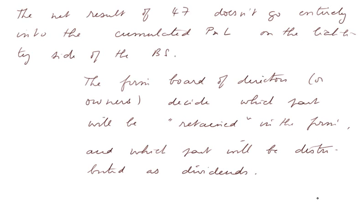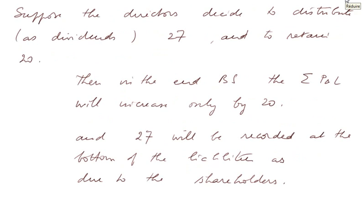The net result of 47 doesn't go entirely into the accumulated P&L on the liability side of the balance sheet, as we saw before. The firm's board of directors or owners decide which part will be retained in the firm and which part will be distributed as dividends. Suppose the directors decide to distribute 27 as dividends and to retain 20 out of the 47 bottom line. Then, in the ending balance sheet, the Sigma P&L will increase only by 20 — the retained earnings — and 27 will be recorded at the bottom of the liability as due to shareholders, payable whenever the directors decide.